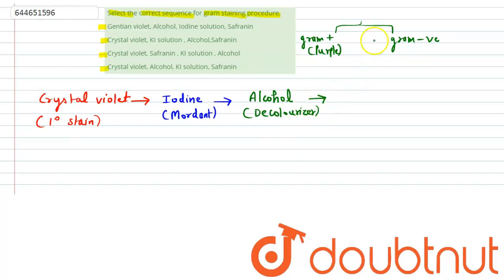So they do not become visible. When they are not visible then the counter stain is used. That is also a basic dye, that is safranin.